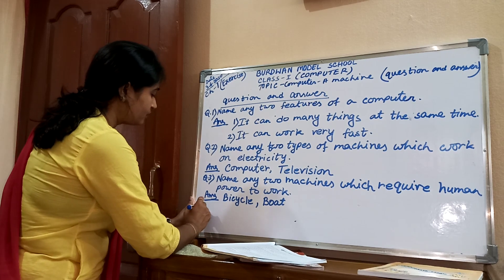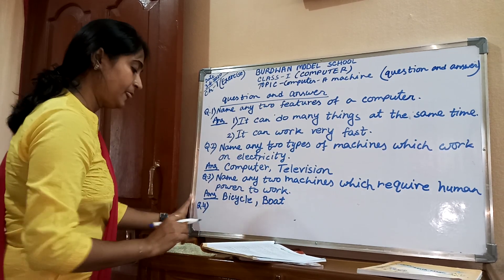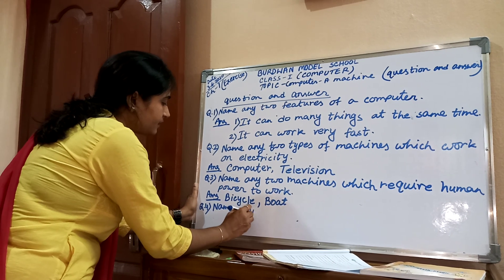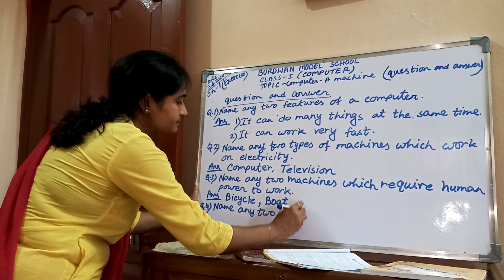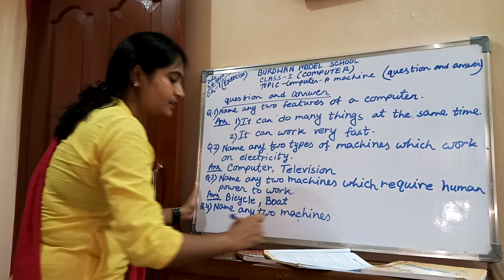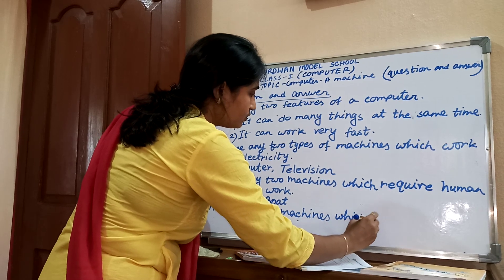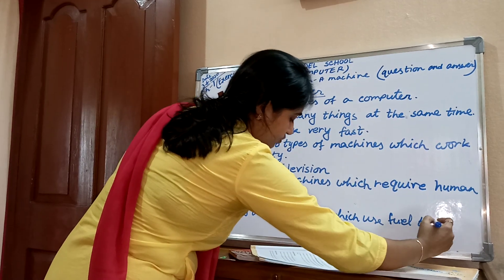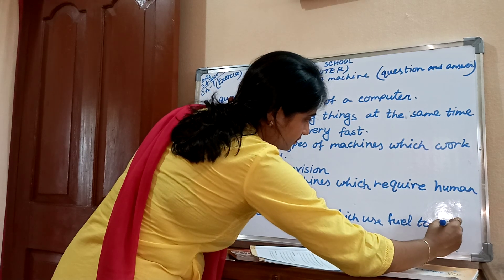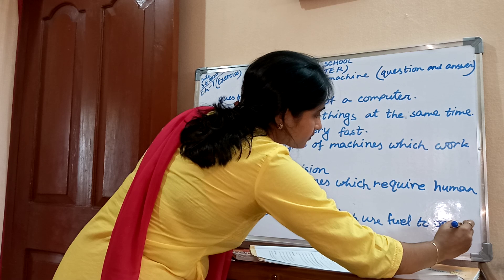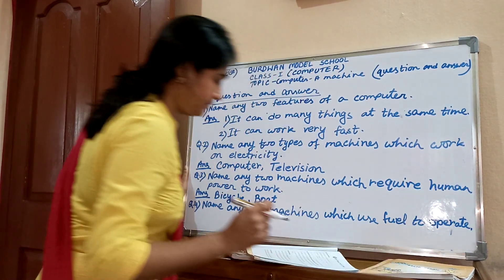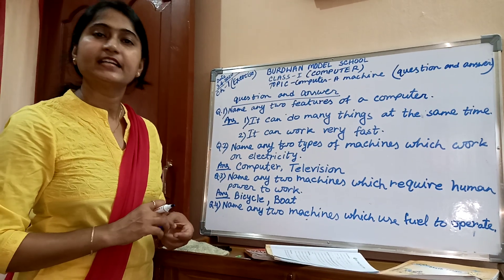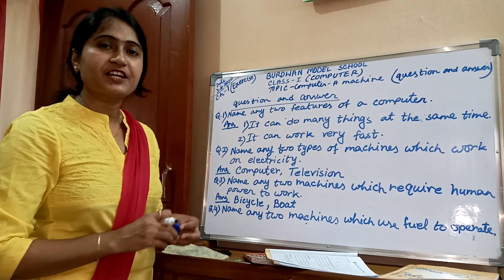Question number 4: Name any two machines which use fuel to operate. Answer: Car, motorbike. Tractor.